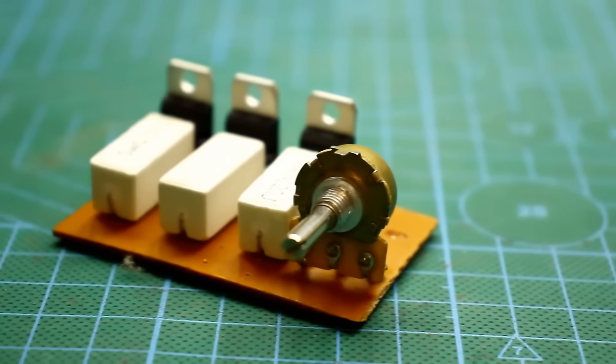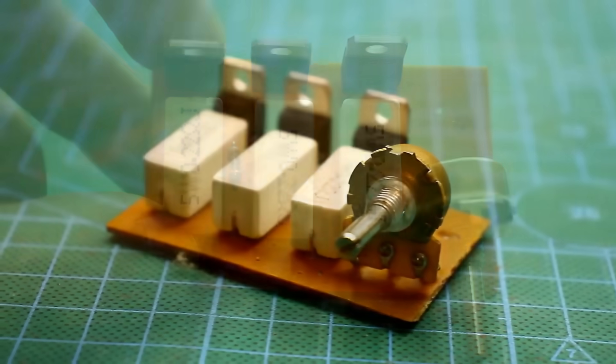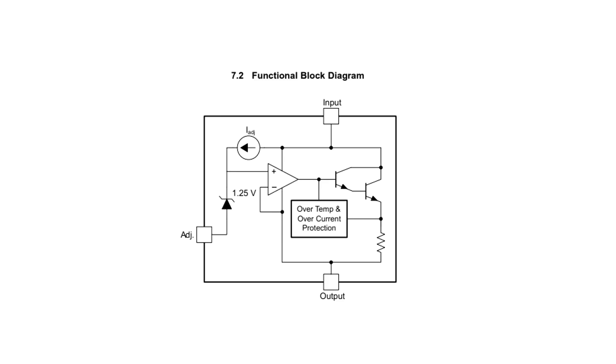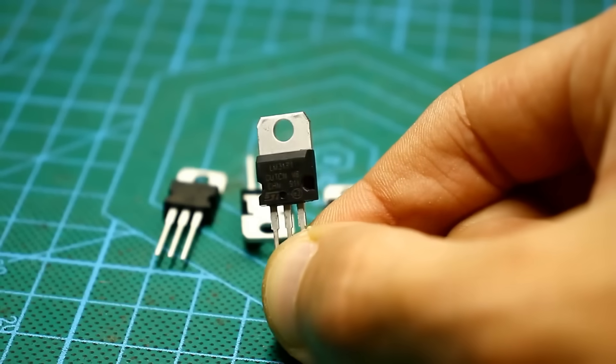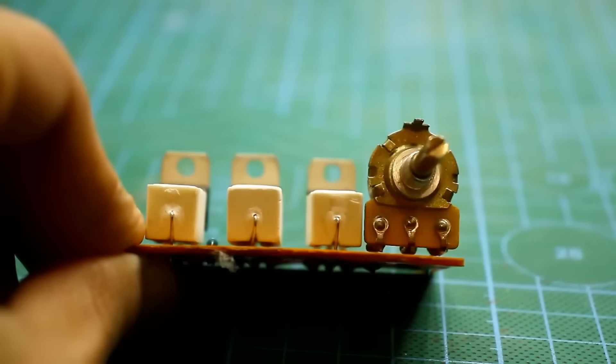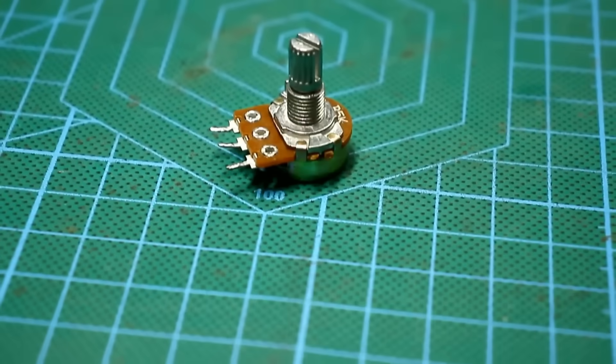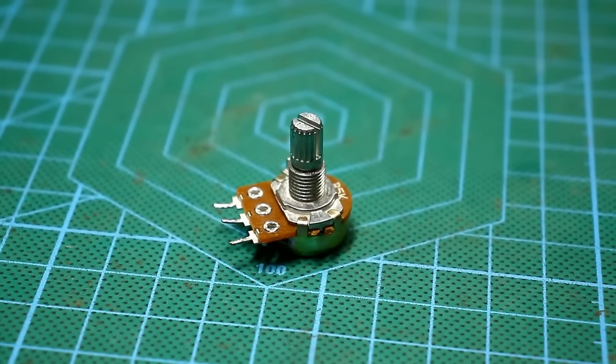If you need a powerful, highly stable, adjustable power supply, this option is perhaps the simplest and most budget-friendly. The internal reference source of the microchip has a voltage of 1.25V. Therefore, when designing laboratory power supplies, it is necessary to consider that the minimum output voltage will not be lower than this value. But what if you want the ability for full adjustment from zero?